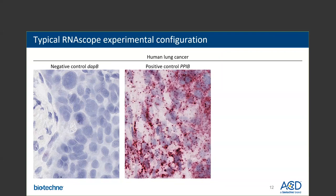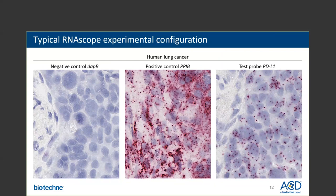With results from these two control probes, we can have confidence in the test data. In the rightmost panel, I am showing a section from the same lung cancer sample probed for the immune checkpoint marker Programmed Death-Ligand 1, or PD-L1. PD-L1 exhibits a wide range of expression in tumor tissues. In this human lung cancer sample, we observe strong punctate dots with the PD-L1 probe, indicating expression of PD-L1 in this tumor sample. The controls show good-quality RNA throughout the tissue and little to no background, so we can be confident that the localized pattern of PD-L1 expression is the correct result.